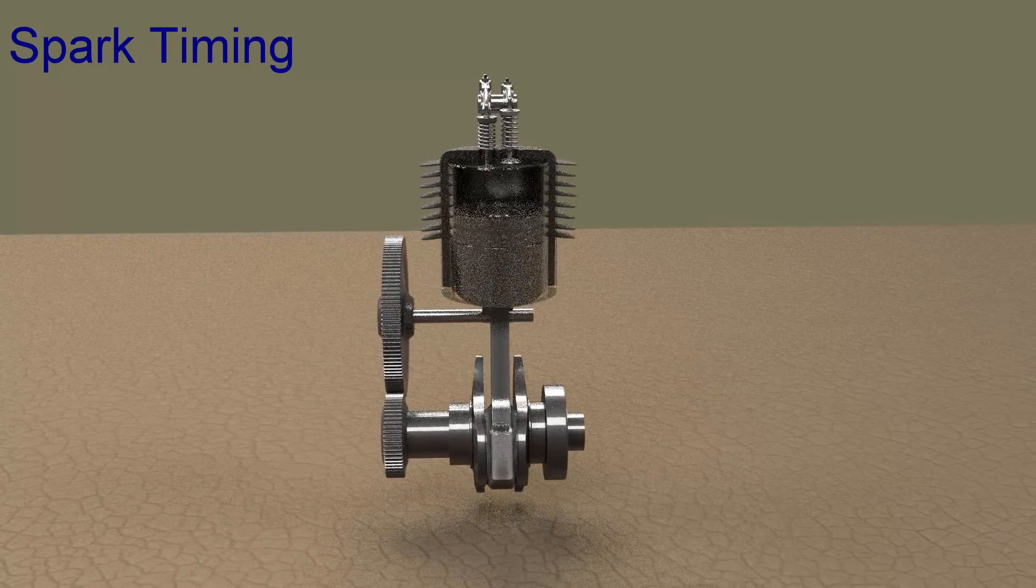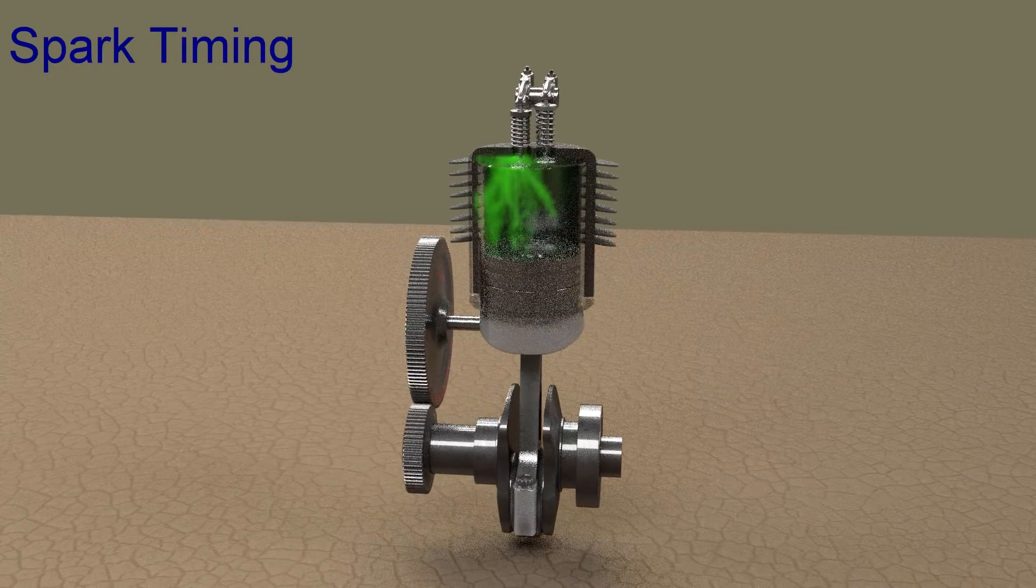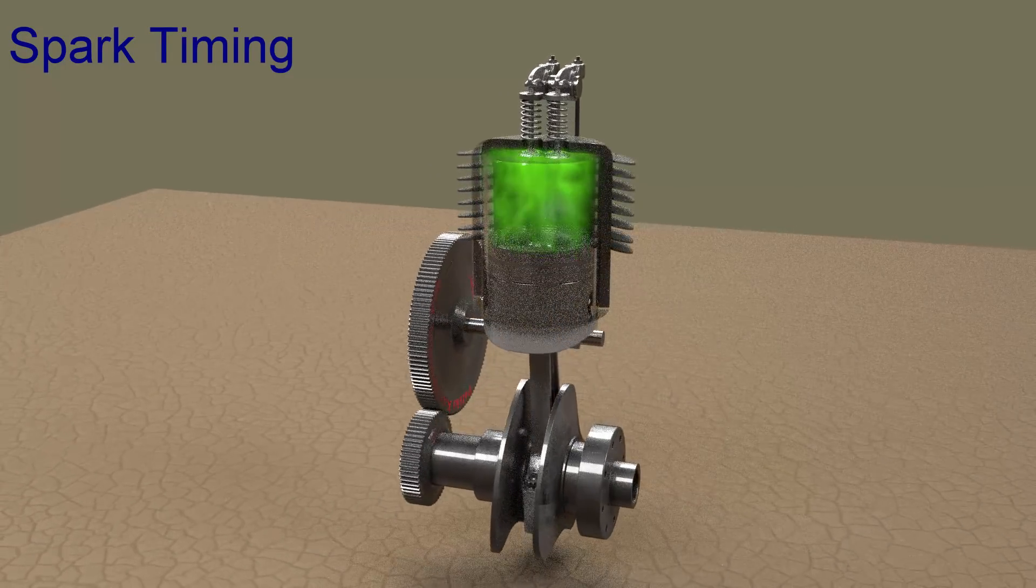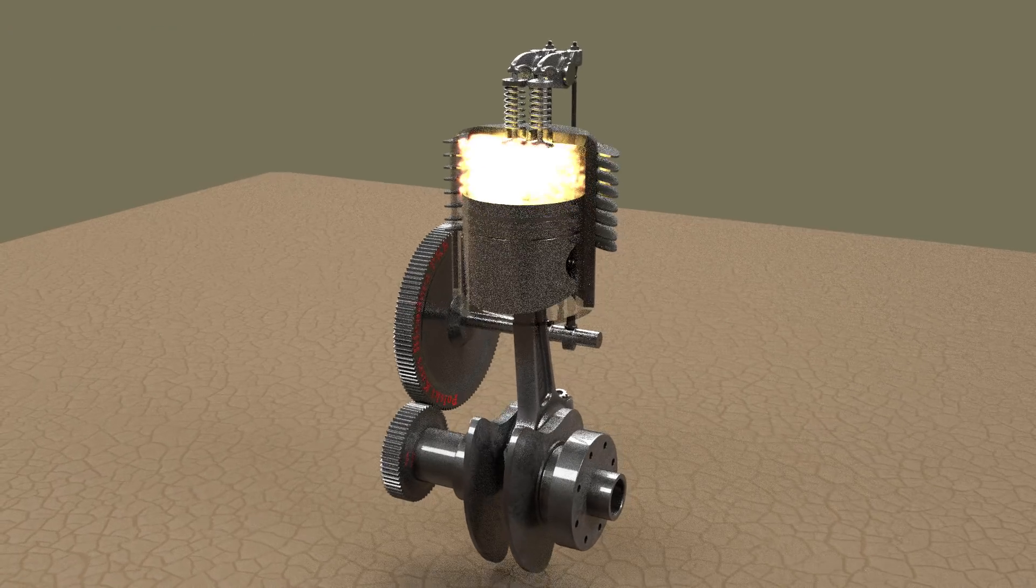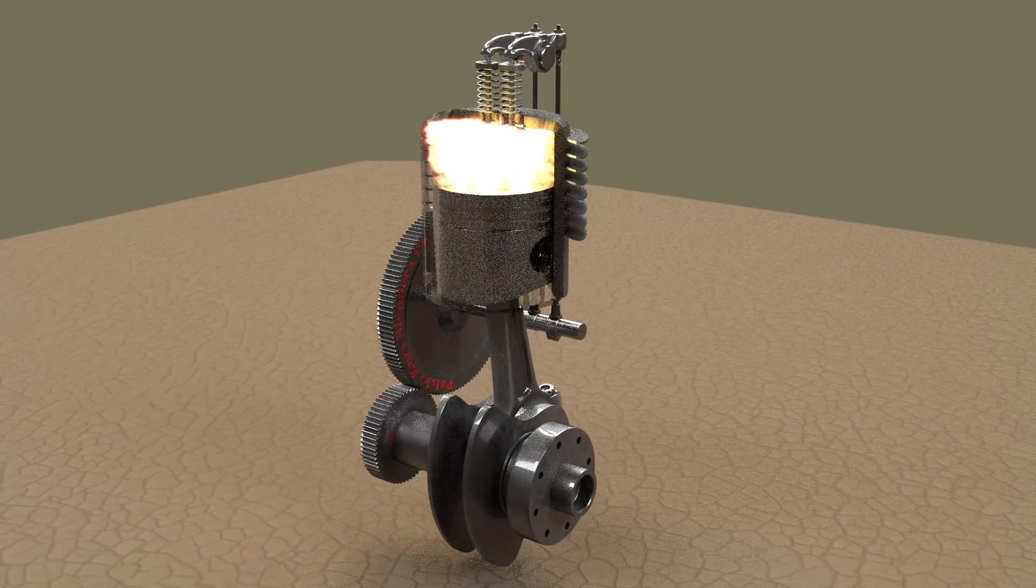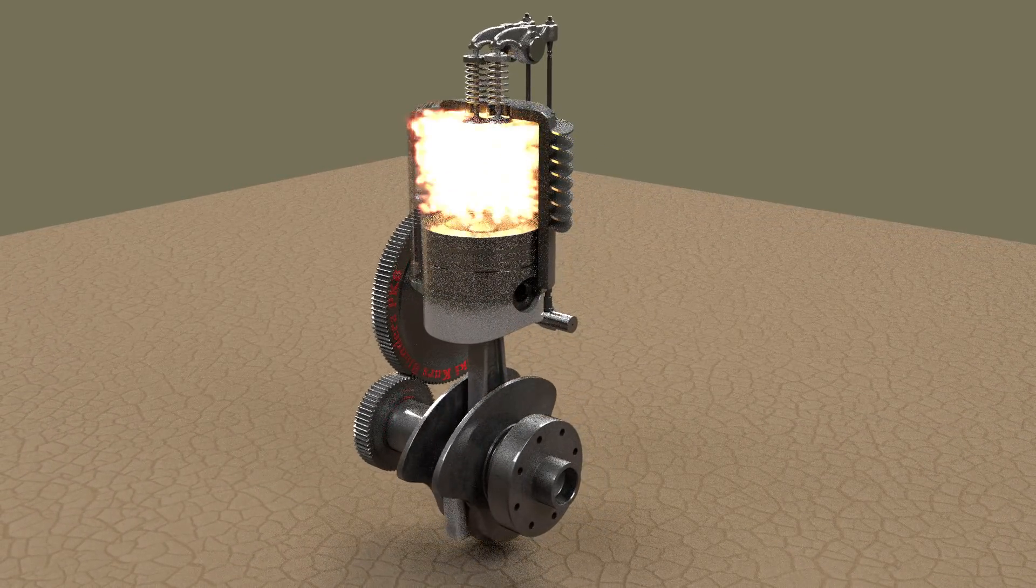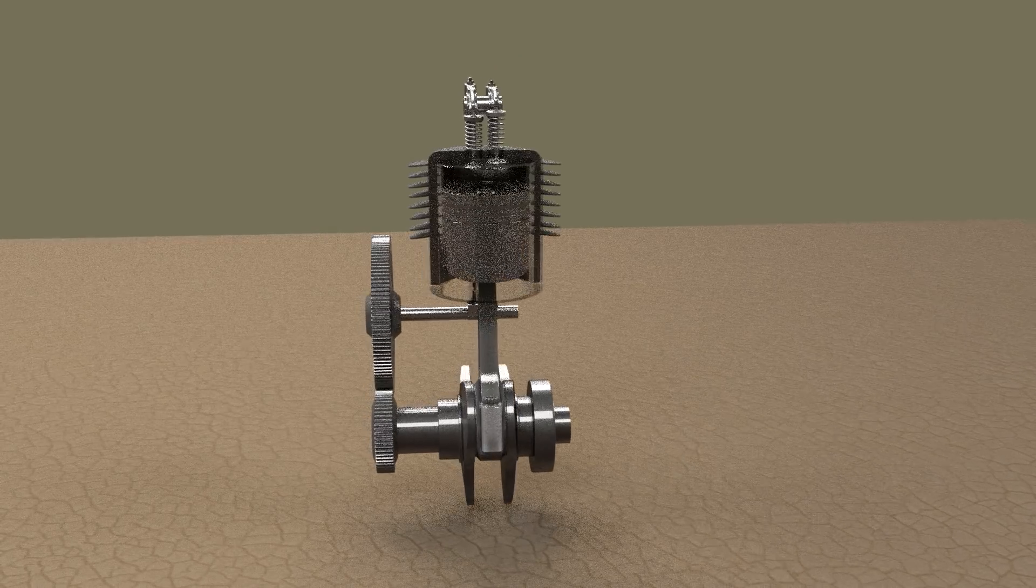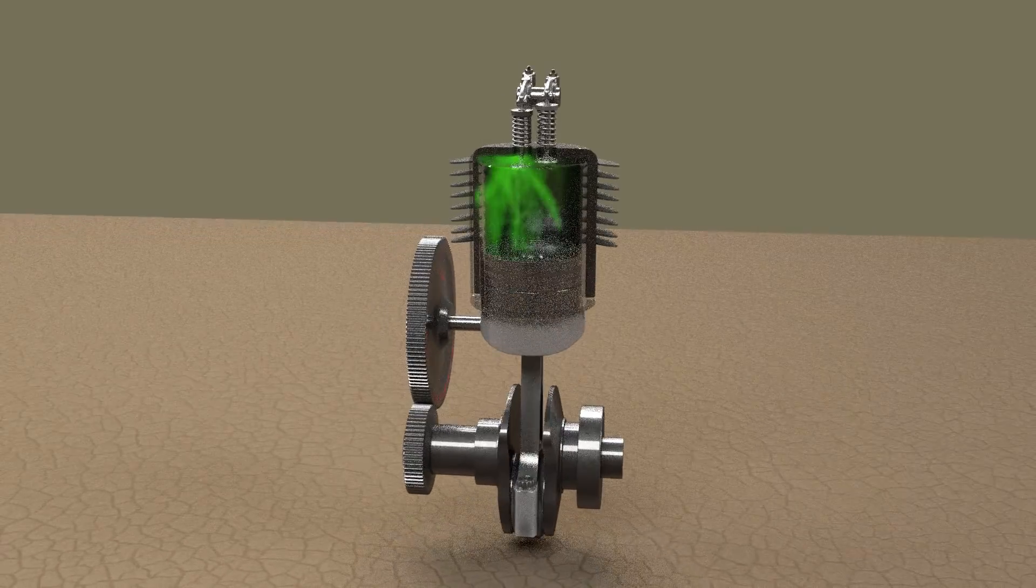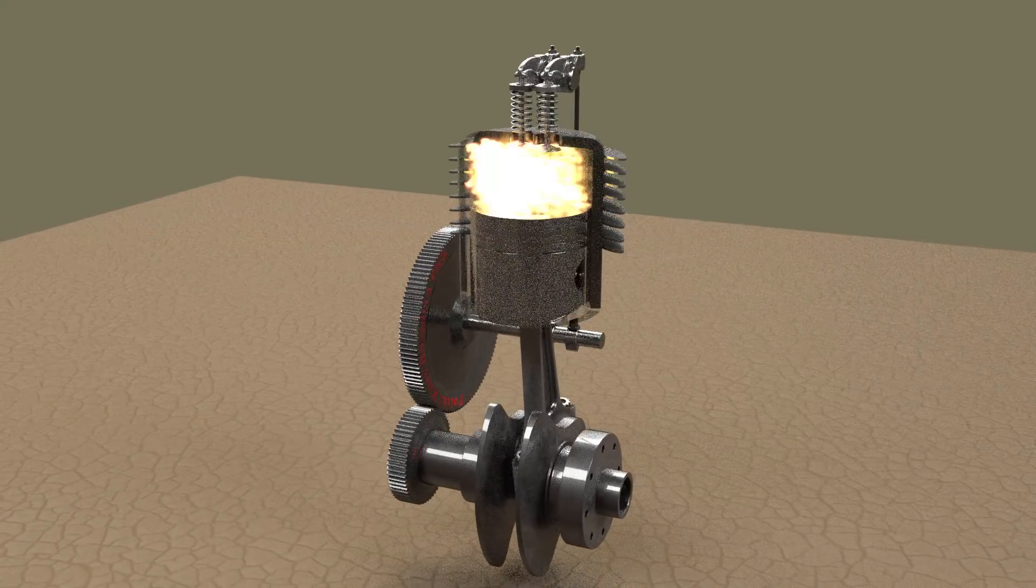The electric spark has to happen at exactly the right time or the engine will not run properly. For example, if the spark occurs much before the piston reaches the top dead center, the fuel will pre-ignite and the increased pressure may lead the piston to move in wrong direction which will eventually stop the engine. Newer engines typically use computerized ignition systems for controlling the timing of spark.